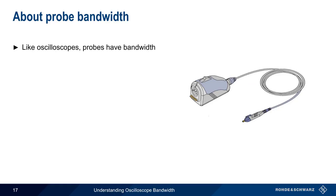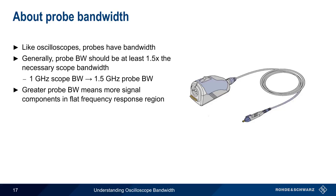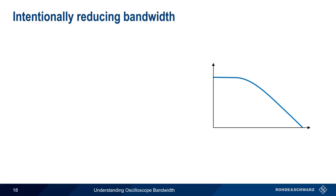Just like oscilloscopes, probes have a bandwidth as part of their specification. When choosing a probe, a good rule of thumb is that the probe bandwidth should be at least 1.5 times the necessary scope bandwidth. That is, if we need 1 GHz of scope bandwidth for a given application, we should choose a probe with 1.5 GHz of bandwidth. And just like scopes, probes also have a bandwidth roll-off, or frequency response. The reason we want a probe with wider bandwidth than the scope is that greater probe bandwidth means that more signal components will be in the flat frequency response region of the probe. In most cases, active probes are required for bandwidths of more than several hundred MHz, although some passive probes can have bandwidths of up to a GHz or more.